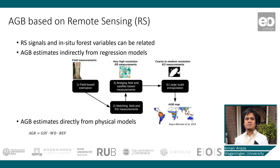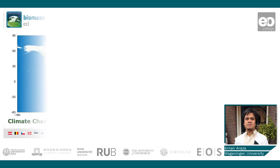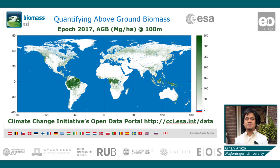The direct estimation of AGB makes use of parametric physical models. The map shown earlier is a direct estimation using synthetic aperture radar, or SAR, as the main input to derive the growing stock of forests, then converted to AGB.